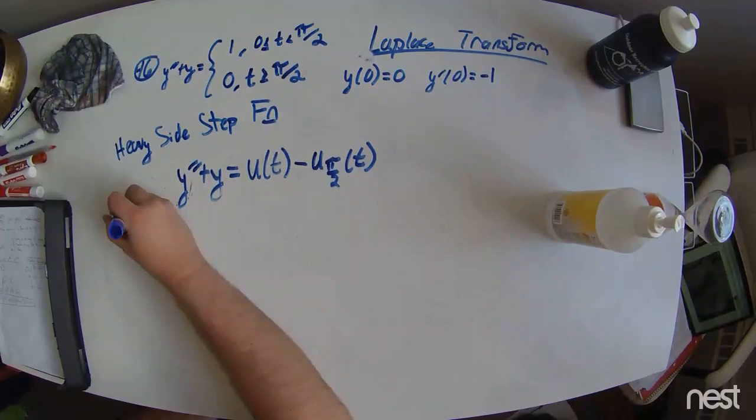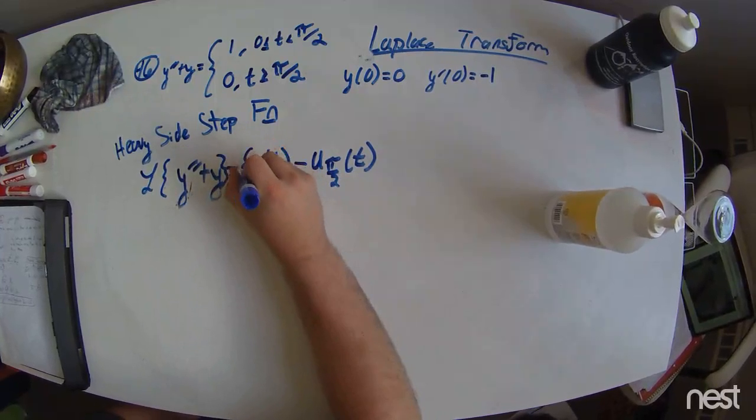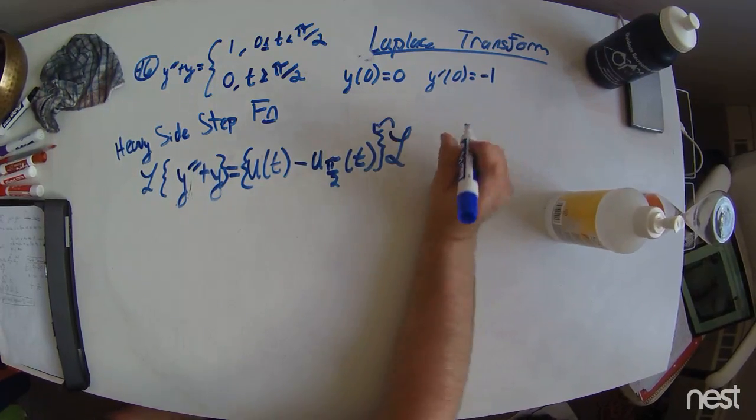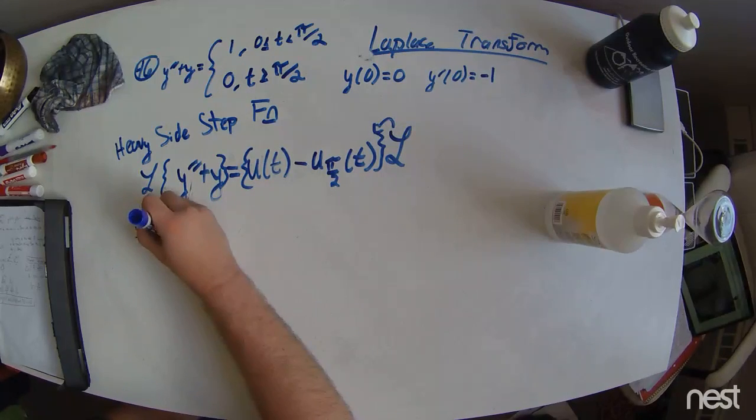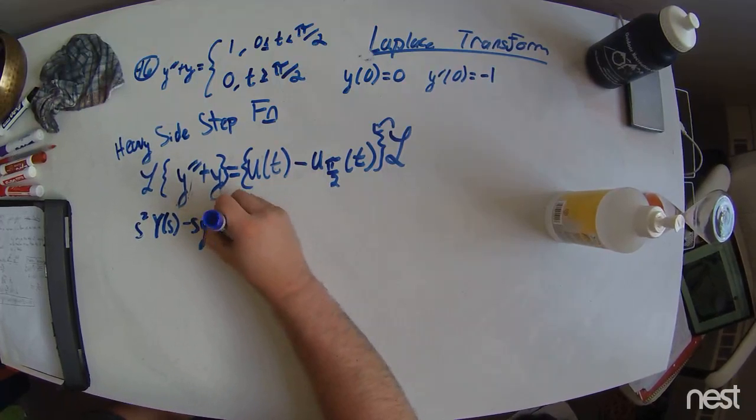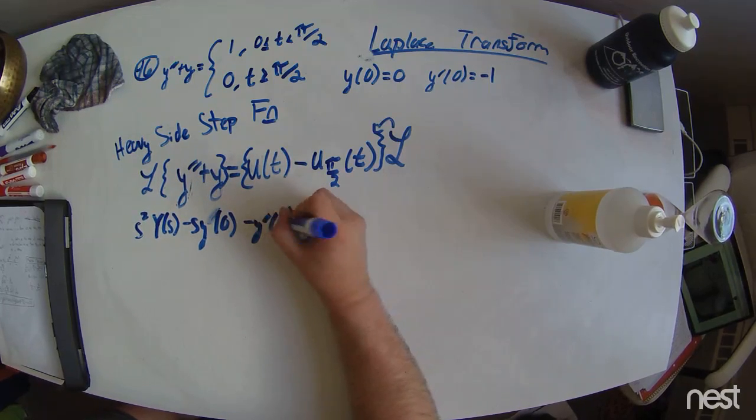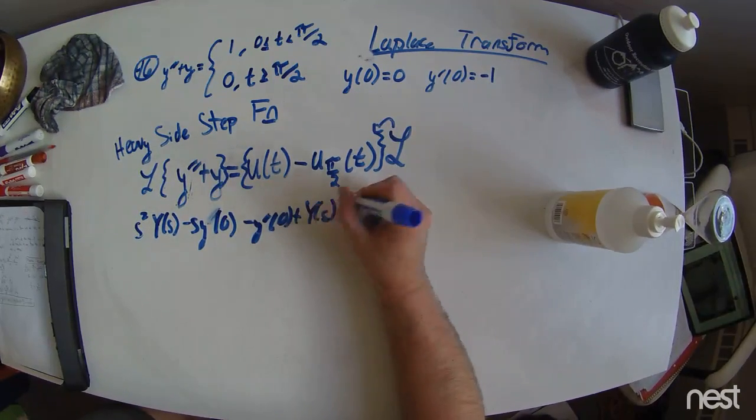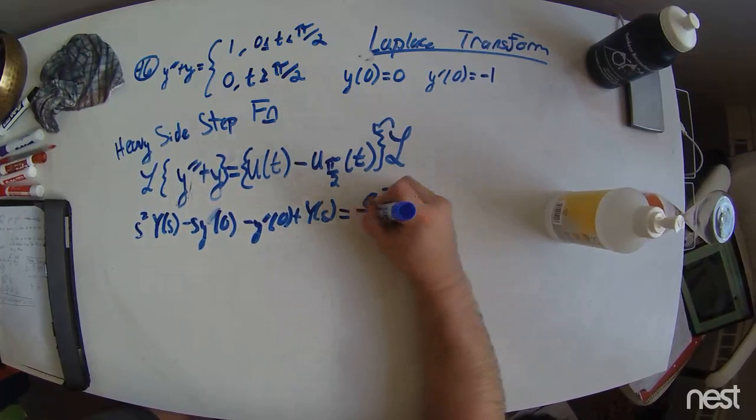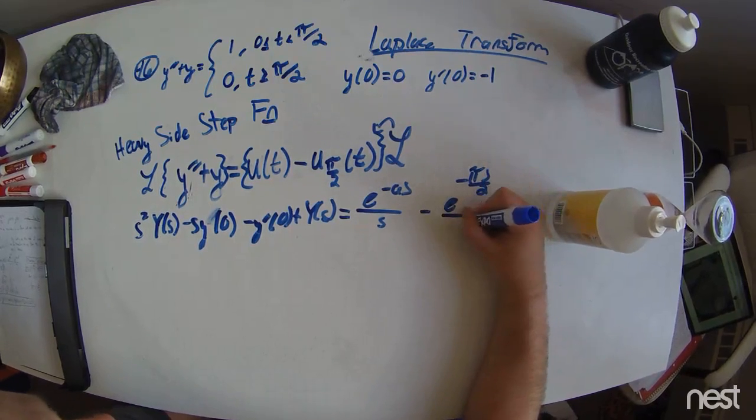Now, taking the Laplace transform of this we get. Laplace transform of this guy, over here. We get s squared, y of s, minus s, y prime of 0, y of 0, minus y prime of 0, plus y of s. Rewrite. Equals e to the minus as, over s, minus e to the minus pi s over 2, over s.